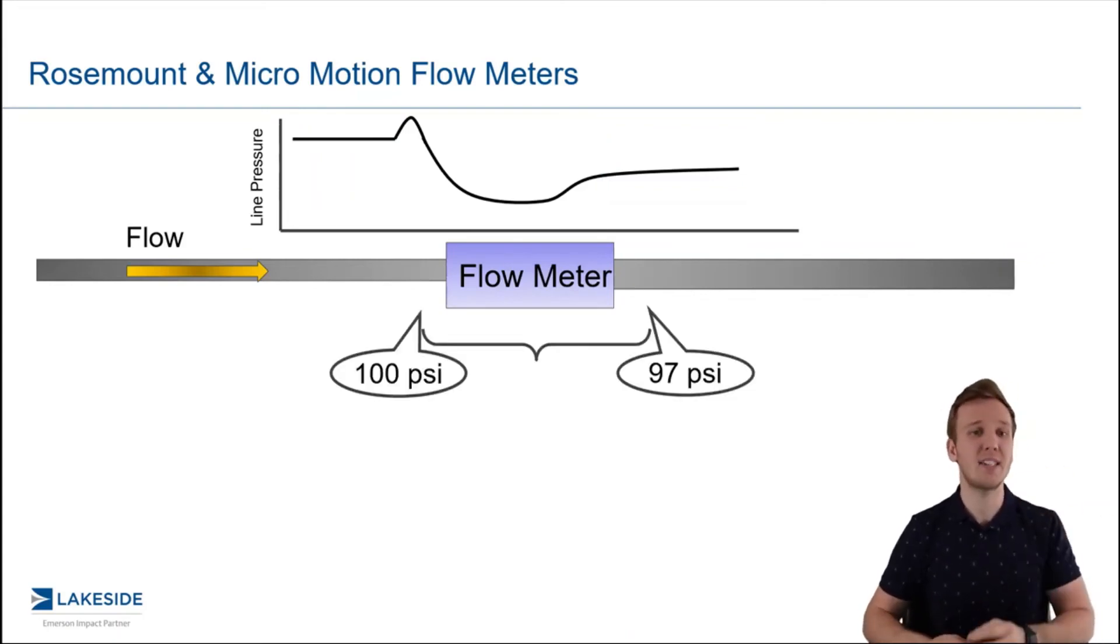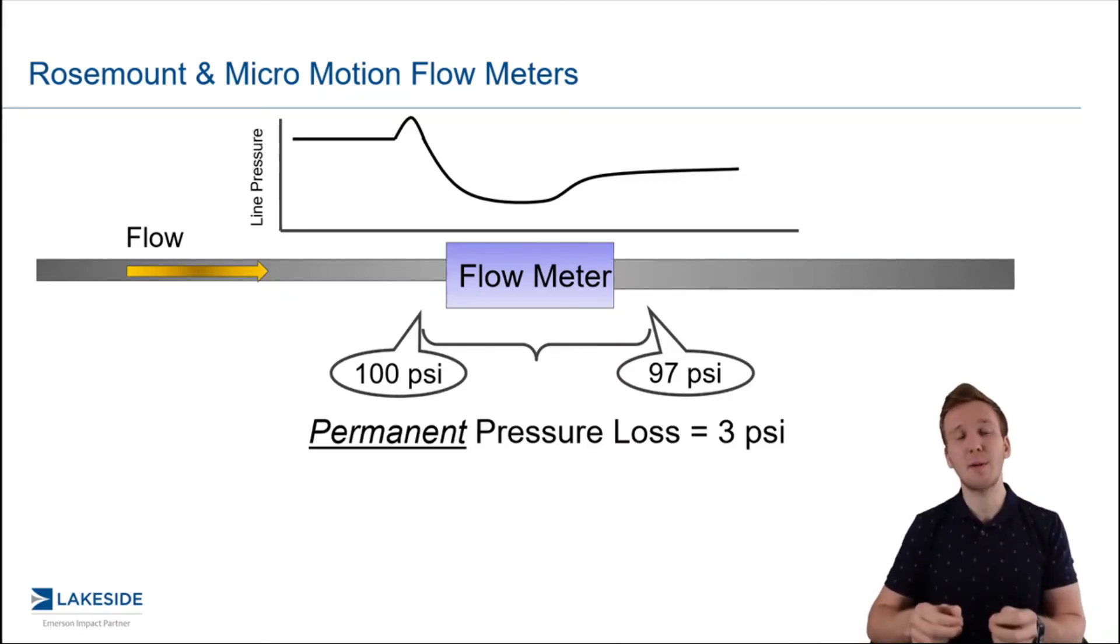So in this case, let's say it's 100 PSI before, 97 PSI after. That means you've lost 3 PSI from this piping system. And this can have a cost impact, especially if it's more significant than 3 PSI, and it's something we need to consider when we're selecting appropriate technologies.